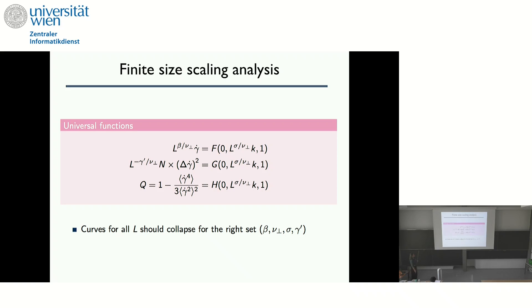And what you do is to introduce universal functions that now are taken at the distance to yield to zero and depend on the size of the system and on the distance of k to zero. And this allows you to get the right set of exponents beta, nu, sigma, and gamma prime when you collapse all the data into a single master curve. Beta is the inverse Herschel-Bulkley exponent. Nu perp would be the exponent related to the correlation length. Sigma is the exponent related to the activity. And gamma prime is the exponent relative to shear rate fluctuations.